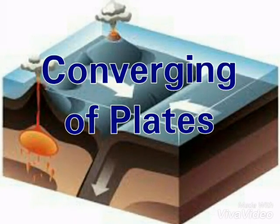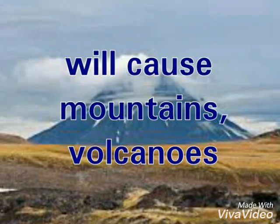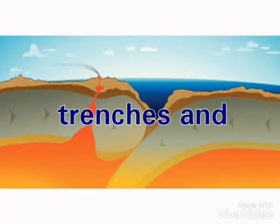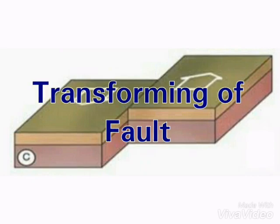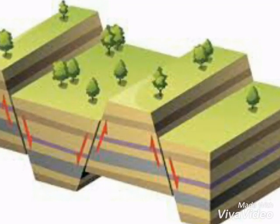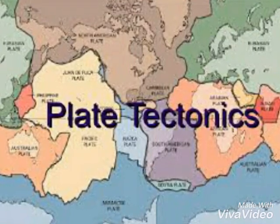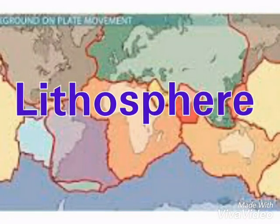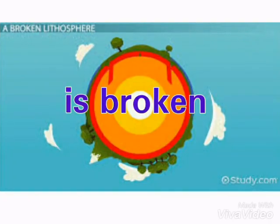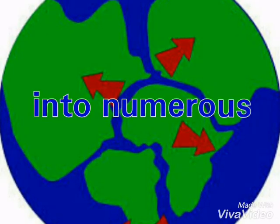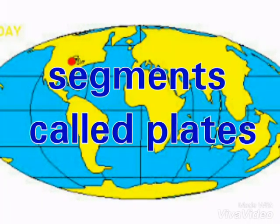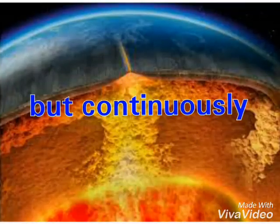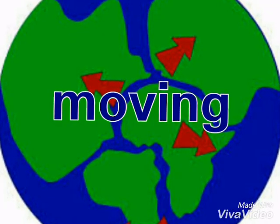Converging of plates will cause mountains, volcanoes, trenches, and earthquakes. The entire sphere of the Earth is broken into numerous segments called plates. Each plate is slowly but continuously moving.